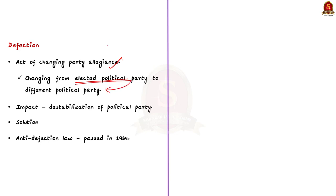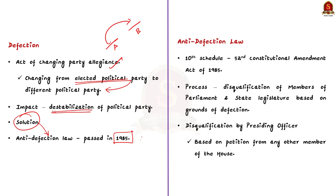Simply, it means changing from one political party to the other. Sometimes this political defection destabilizes the political party, so to address this evil, the anti-defection law was passed in the year 1985. The 10th Schedule of the Constitution speaks about the anti-defection law. It was added through the 52nd Constitutional Amendment Act of 1985.